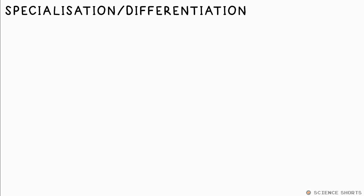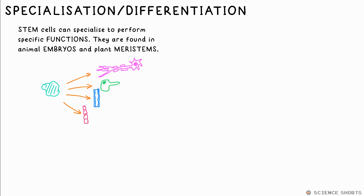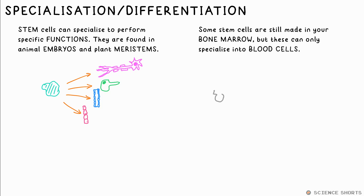Cells specialise or differentiate depending on the function they need to fulfil — for example, nerve, muscle, root hair, xylem and phloem cells. Stem cells are those that haven't yet specialised. They're found in human and animal embryos and the meristems of plants — that's the top of the shoot. Stem cells are also made in your bone marrow throughout your life, but these ones only specialise into blood cells.